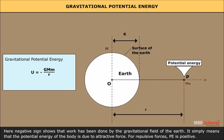The negative sign shows that work has been done by the gravitational field of the Earth. It simply means that the potential energy of the body is due to attractive force. For repulsive forces, PE is positive.